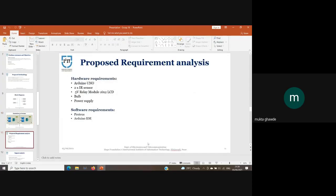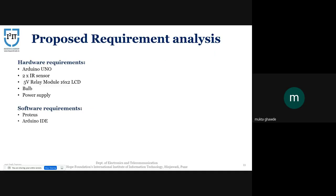I now request Rishita to continue with the further presentation. Now we will see hardware and software requirements. For hardware, we need an Arduino UNO — a microcontroller using the ATmega 328 microprocessor, used for controlling the whole process. We also need two IR sensors: one for detecting the entry of people and one for exit. A 5-volt relay module is used, which helps the Arduino operate high-voltage AC loads like a light.